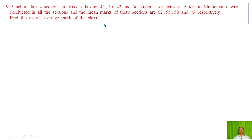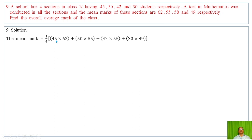Find the overall average mark of the class. The four sections have 45, 50, 42 and 30 students with mean marks of 60, 55, 58 and 49 respectively. The overall average is computed as the sum of (number of students × mean marks) for each section, divided by the total number of students, giving an overall average mark of 56.56.